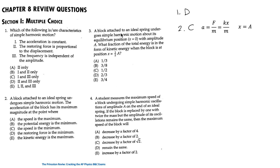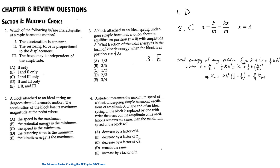For question 3: a block attached to an ideal spring undergoes simple harmonic motion about its equilibrium position with amplitude A. What fraction of the total energy is kinetic energy when the block is at position A/2? With no friction, the total energy is conserved and equals ½KA². When x = A/2, the potential energy is ½K(A/2)², and from this we find the kinetic energy. At that position, the kinetic energy is ¾ of the total energy. The answer is E.